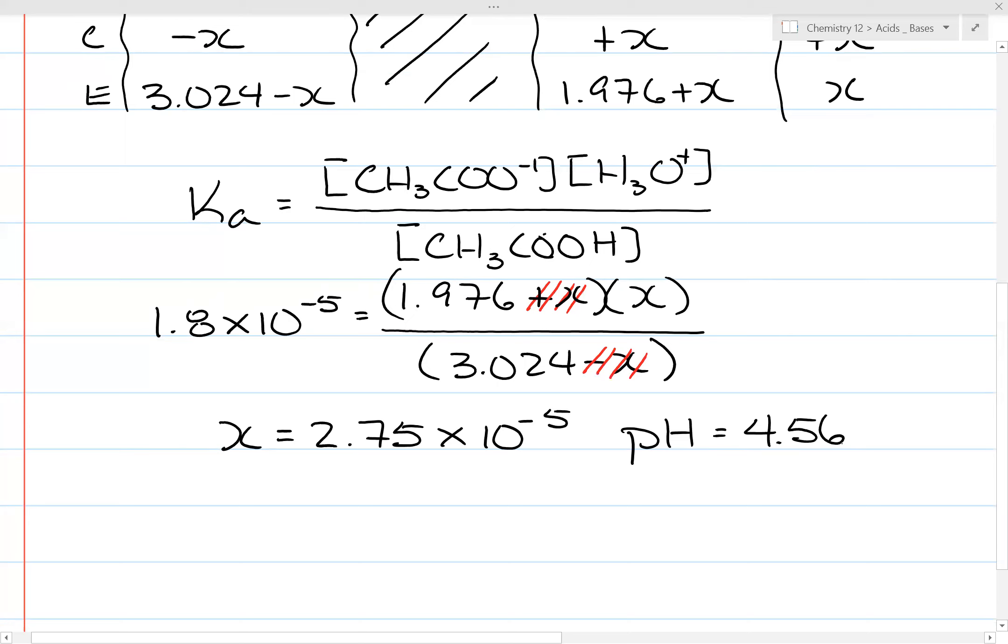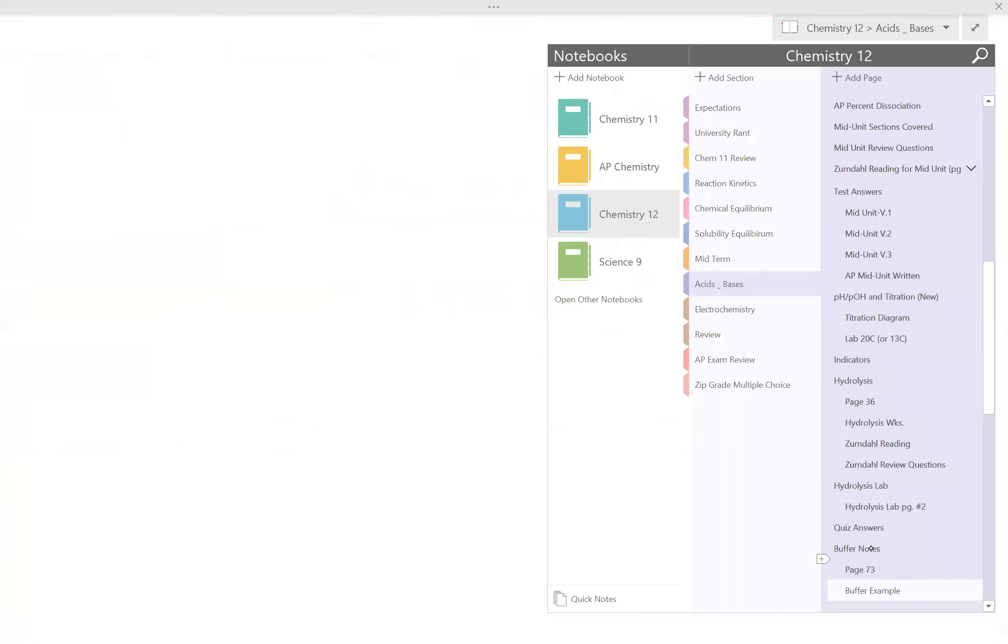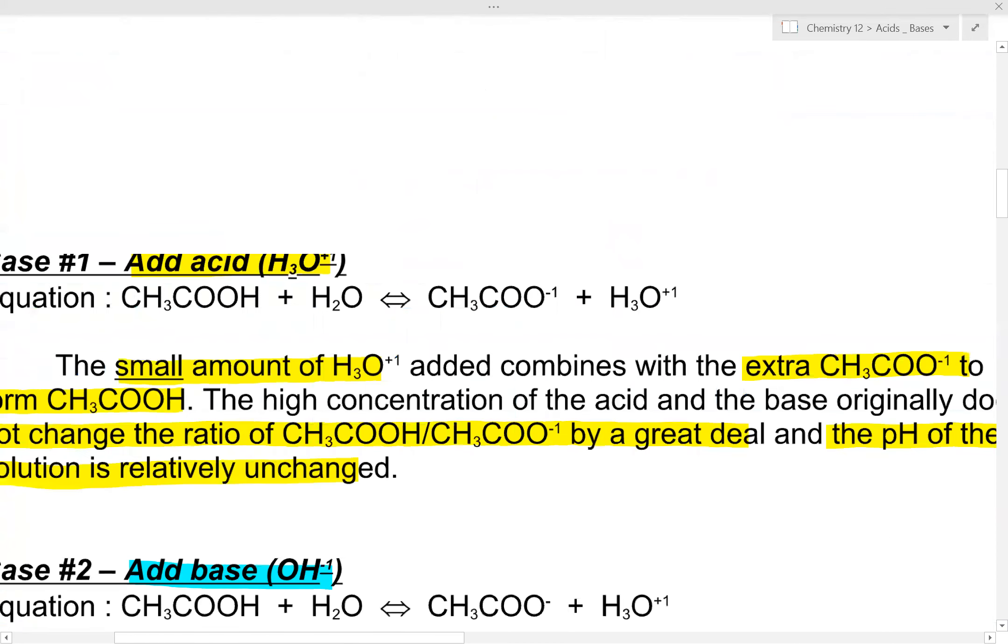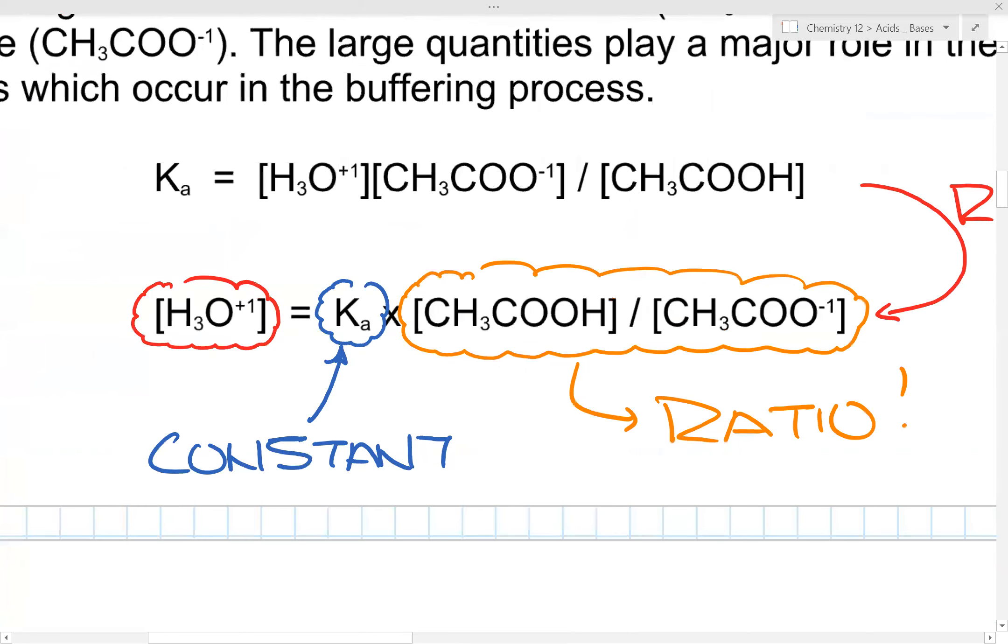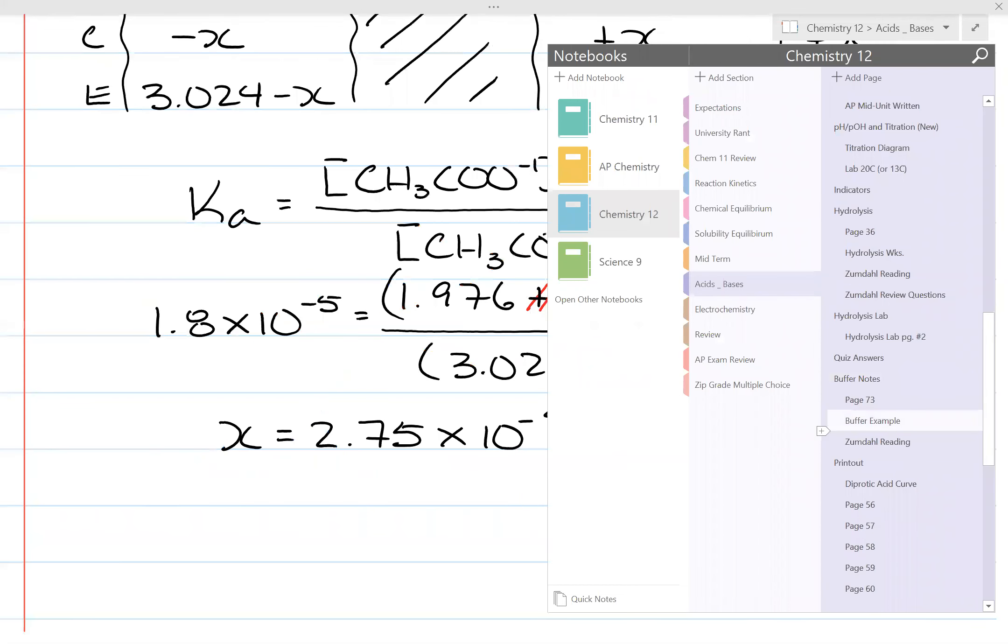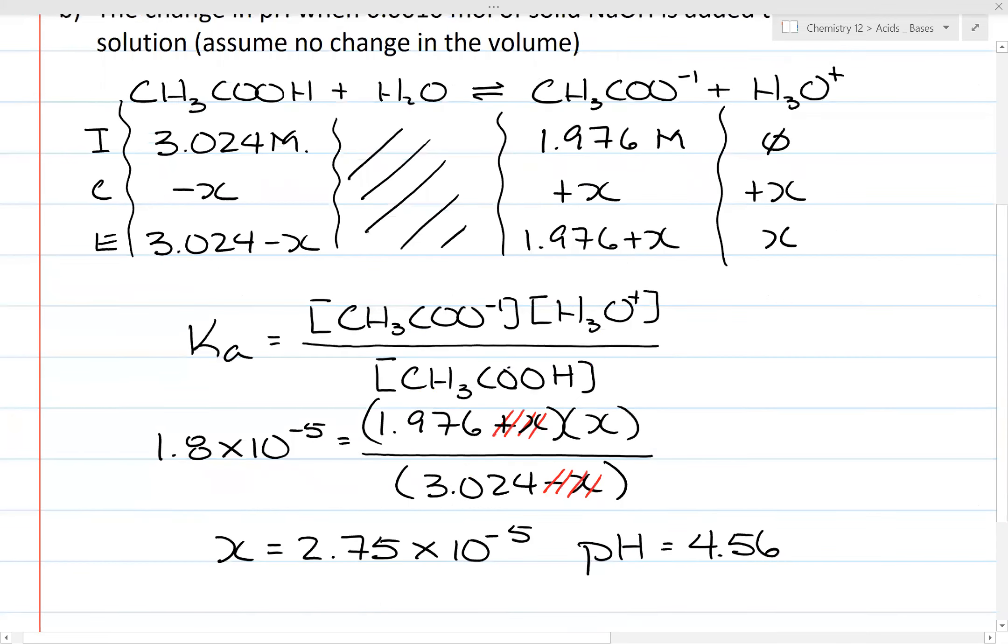Now, some of you might say, Mr. Chan, could I have just plugged in the values into this equation here? Yes, you could have. You could have had the H3O plus times the Ka and then the ratio of the two ion concentrations, and you would have gotten exactly the same answer. I just decided to follow the rules of ice table and that sort of stuff.